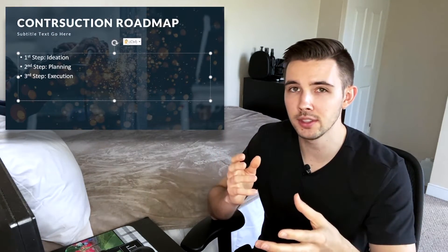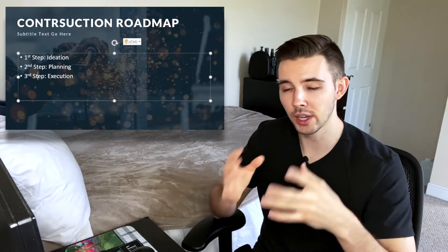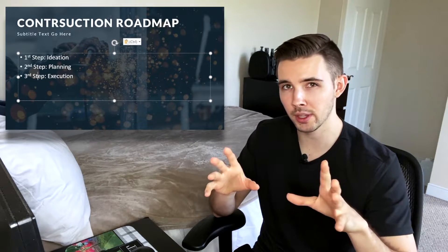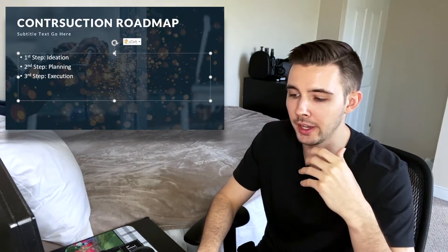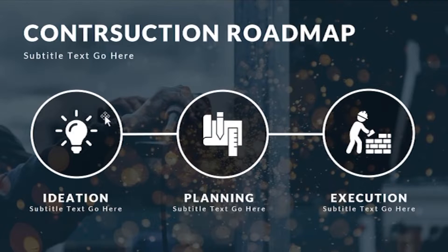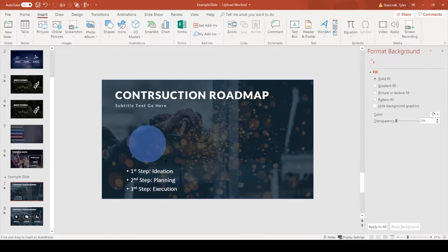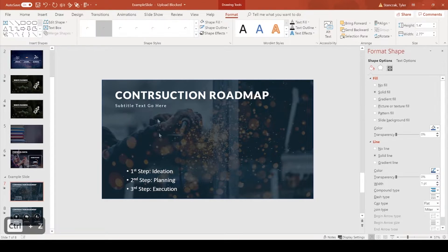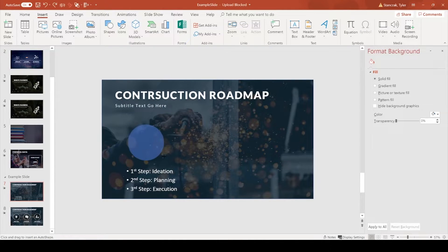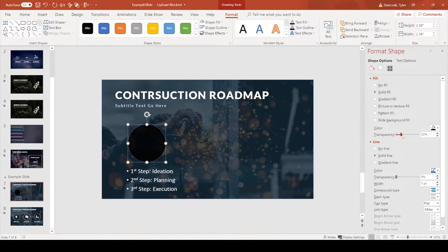For the steps, I want to avoid bullet points and keep it as visual as possible. I'll shift the text down and create three circles with icons. To insert a circle, go to Insert > Shapes > Circle and hold down Shift as you draw so it stays proportionate. I make the circle black with some transparency and change the border line to white with a thickness of 4.25.